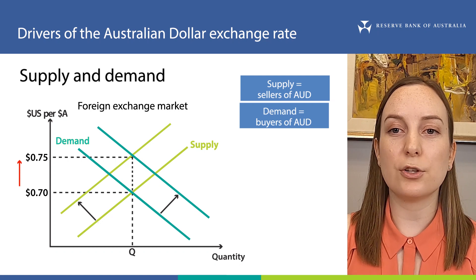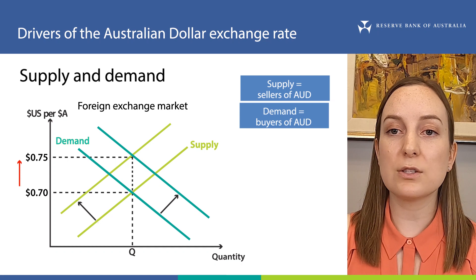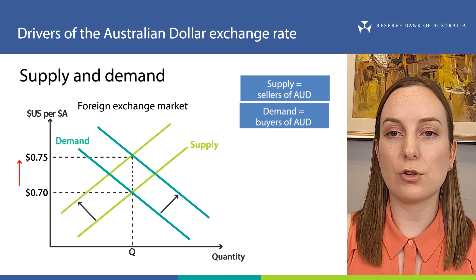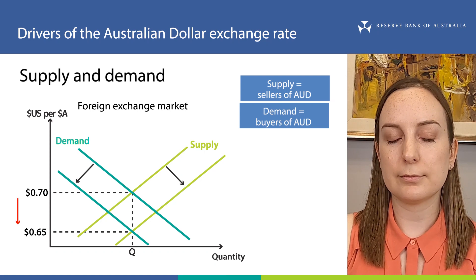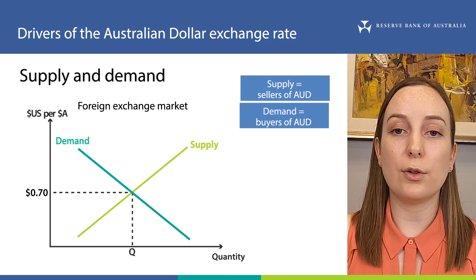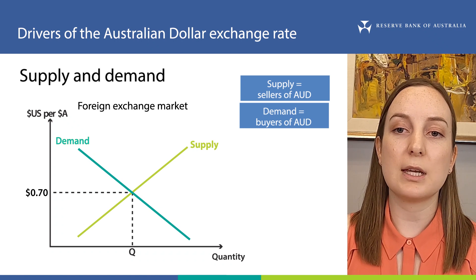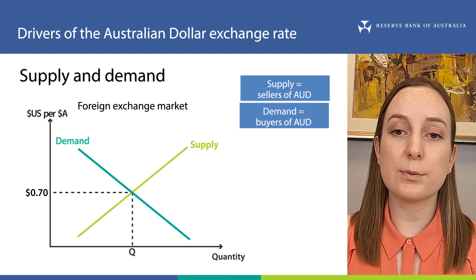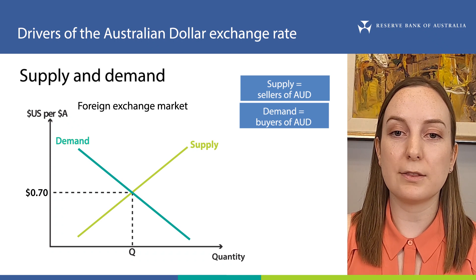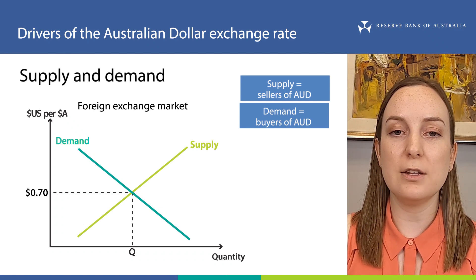This means the Australian dollar is more valuable relative to before — that is, more US dollars are needed to buy one Australian dollar. It is the opposite for a depreciation. Keep in mind that the drivers of the Australian dollar do not occur in isolation. A whole range of things could be happening at the same time, and this can push the exchange rate in different directions. As a result, when we talk about factors that affect the supply of and demand for Australian dollars, we often talk about how they lead to a higher or lower exchange rate than otherwise.